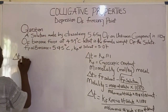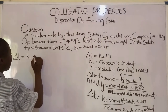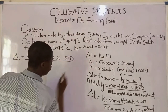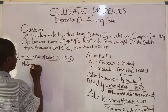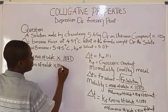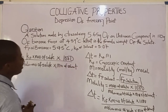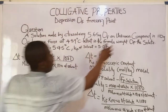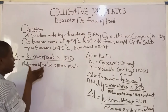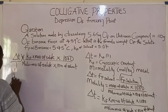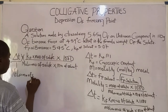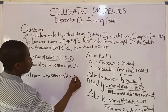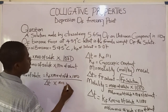So delta t equals Kf times mass of solute times 1,000, all over molar mass of solute times mass of solvent. Benzene is the solvent and the unknown compound is the solute. We are asked to find the molar mass of the unknown compound. Making molar mass of solute the subject gives: molar mass of solute equals Kf times mass of solute times 1,000, all over delta t times mass of solvent.